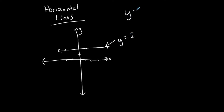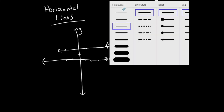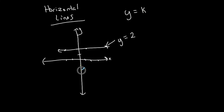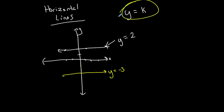The general form of these equations is y is equal to k, where k is a number. For example, if I have a line down here at negative 3, the equation of this line is y equals negative 3. So every horizontal line has the equation y equal to a constant. That's the general form.